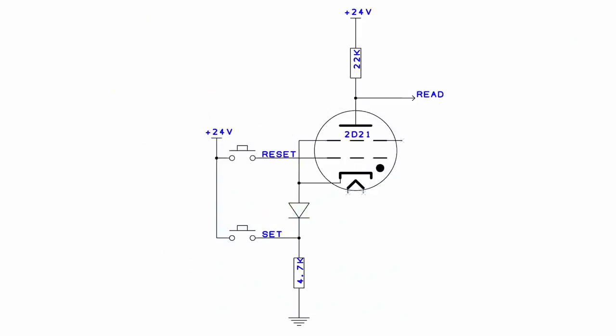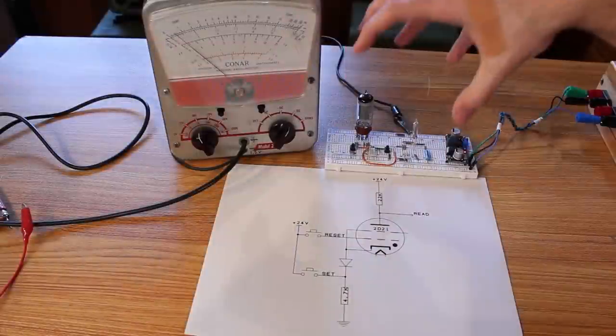When this happens the control grid is no longer part of the equation. The only way to stop the tube from conducting is to interrupt the flow of current through the tube. In the setup here we have a 22,000 ohm plate resistor and the cathode goes through a diode and then a 4,700 ohm resistor to ground. If I push the reset button, that brings the grid high enough to allow the tube to ionize and generate plasma connecting anode to cathode, bringing the value of the anode low. If I want to set it, I press the set button putting a strong positive voltage on the cathode which interrupts the flow of current and allows the tube to deionize. When this happens the tube is no longer conducting and the 22,000 ohm resistor pulls the value of the plate back up to 24 volts.